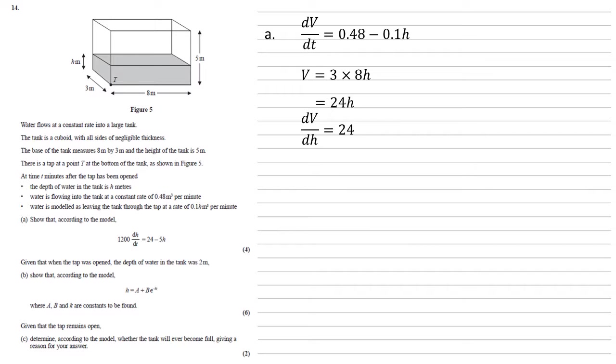We're trying to work out dh by dt for our answer. Well, dh by dt is just going to equal dv by dt divided by dv by dh. We've calculated those already. So we end up with 0.48 minus 0.1h all over 24. Multiplying both sides by 24, we get 24 dh by dt equals 0.48 minus 0.1h, which is almost the answer we're needing.